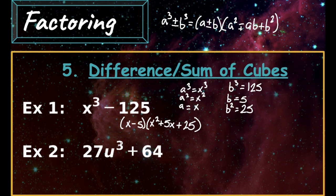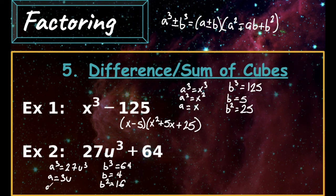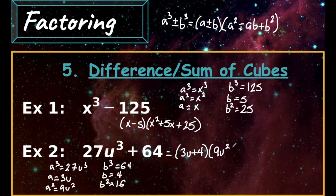For example 2, we have 27u cubed plus 64. a cubed is 27u cubed so a equals 3u and a squared equals 9u squared. b cubed is 64 so b equals 4 and b squared equals 16. Plugging all values in, we get 3u plus 4 times 9u squared minus 12u plus 16.